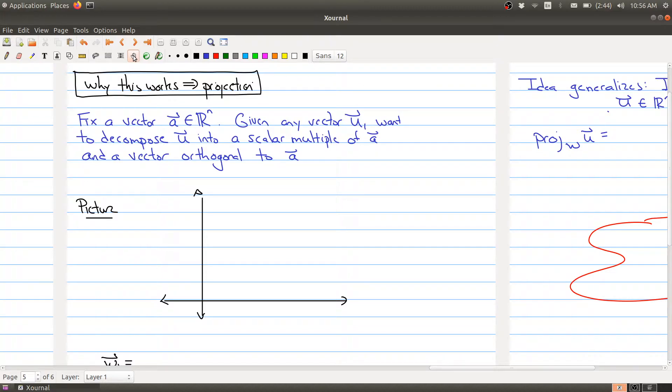So why does this whole process work? Well it has to do with this notion of projection. Here's the situation we want to look at in detail. Suppose that we fix some vector a. Given any vector u, we want to decompose u into a scalar multiple of a and a vector orthogonal to a.